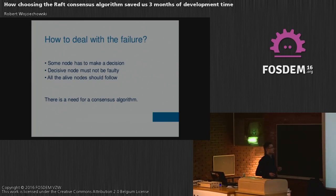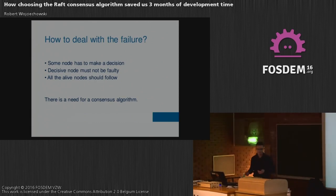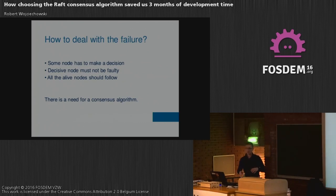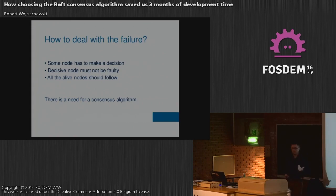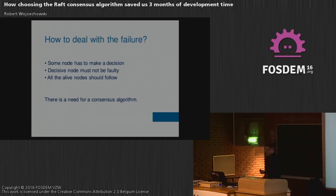So I started thinking about what could be done to improve this software and make it aware of automatic failover. What I needed was the ability for the cluster member nodes to detect a failure situation. In order to do that, I needed some leader node which would perform the operations I previously had to do from the CLI interface as an admin. The leader node should do this task on my behalf, and all the other live nodes should follow the decision made by this leader node.